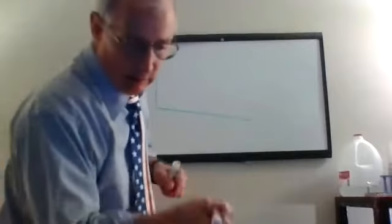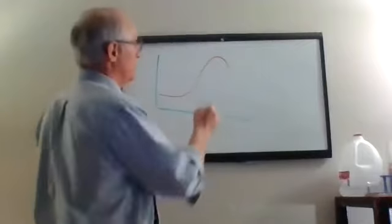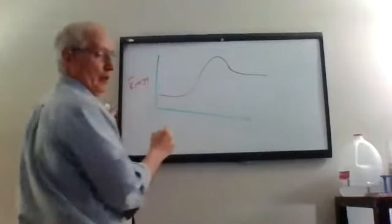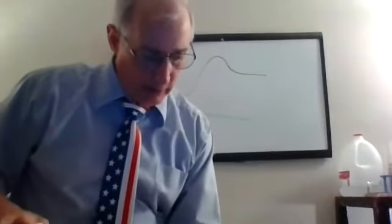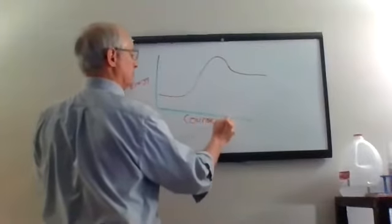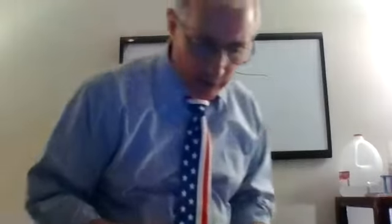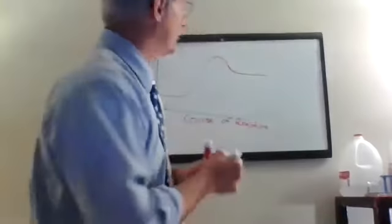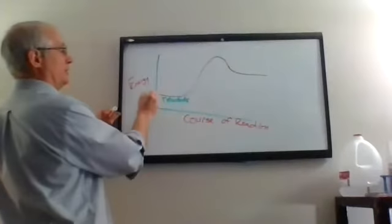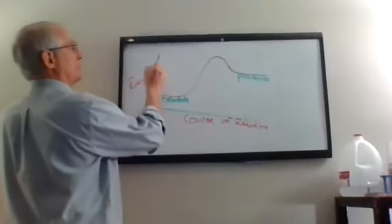We're going to put that graph like this. This time it levels out like this. This is energy, and this is the course of the reaction. Now what is it asking for? It says label the reactants and the products. That's how much energy the reactants have. That's how much energy the products have.